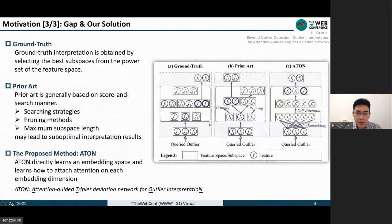Let's look at this toy example. The ground truth interpretation can be obtained by selecting the best subspace from the power set.